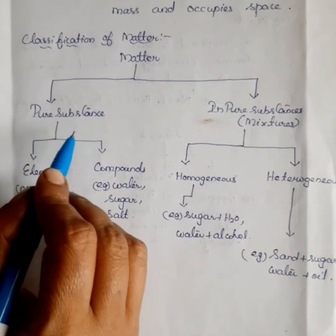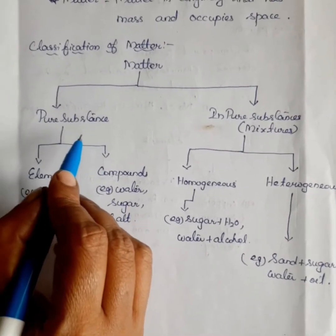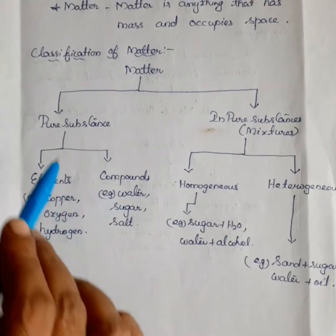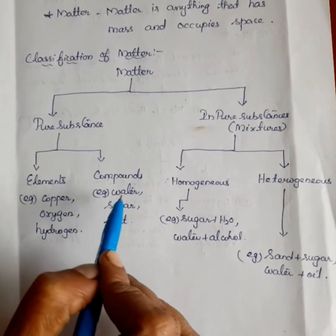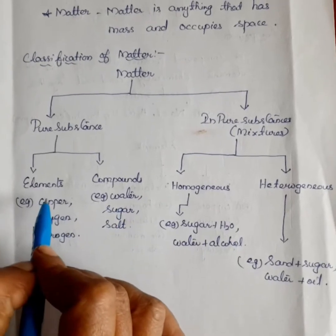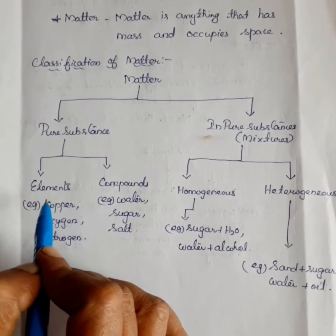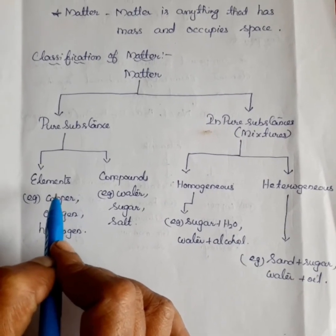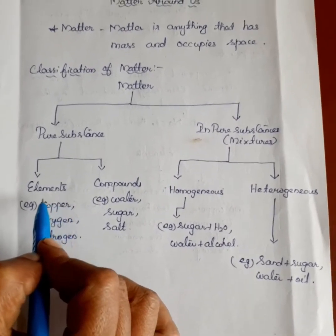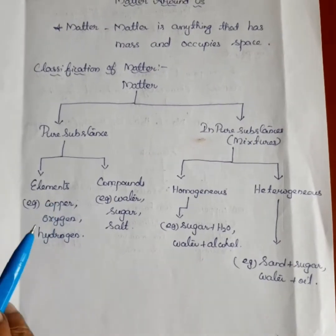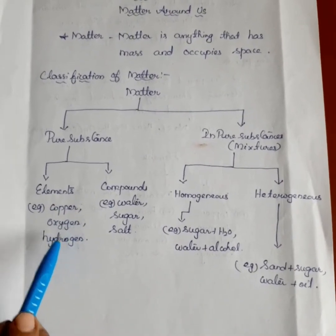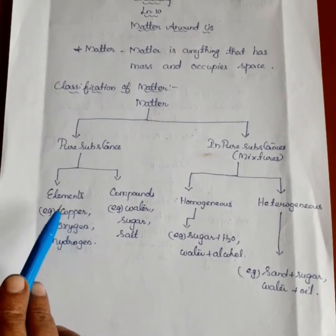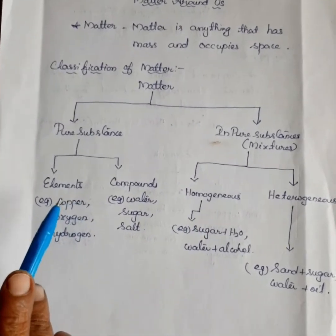Now we discuss about pure substance. Pure substance is classified into two types: elements and compounds. The element is a pure substance. Element is the substance that cannot be broken into simpler substances. Some examples are copper, oxygen, and hydrogen. Elements are made up of only one type of atom.